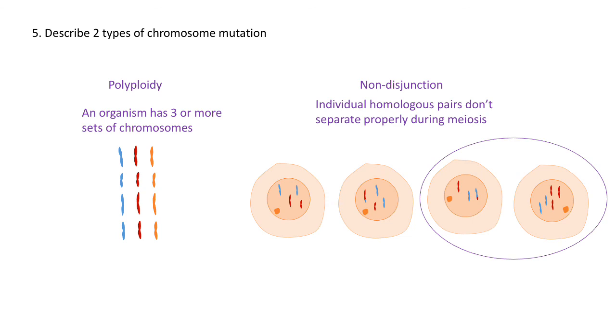If one of those gametes is involved in fertilization, the resulting cells of the organism will have either one fewer chromosome or one extra chromosome in all its body cells.